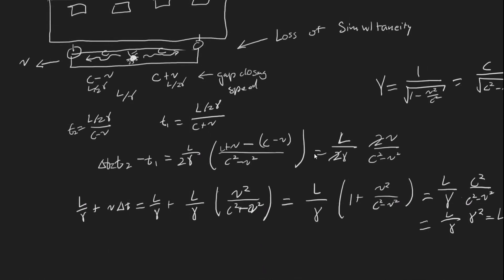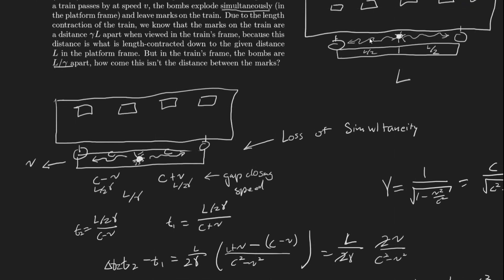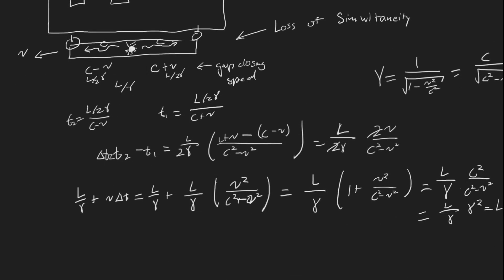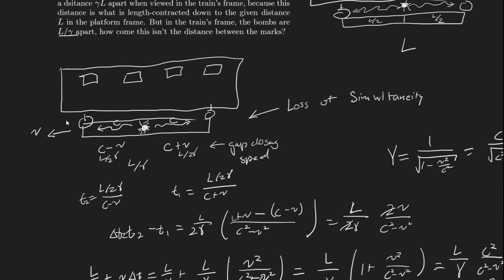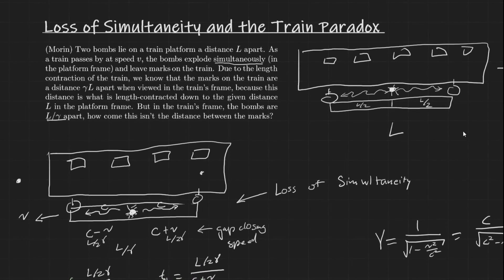This confirms the distance between marks is gamma L, coming directly from the loss of simultaneity. Since the bombs explode simultaneously in the platform frame — defined by the light hitting them — in the train's frame this one actually explodes later because it's moving away from the light, causing the second explosion to happen farther along and extending the distance to gamma L. This is really beautiful, and it's fun to think through these paradoxes. This is also closely related to the classic train paradox.